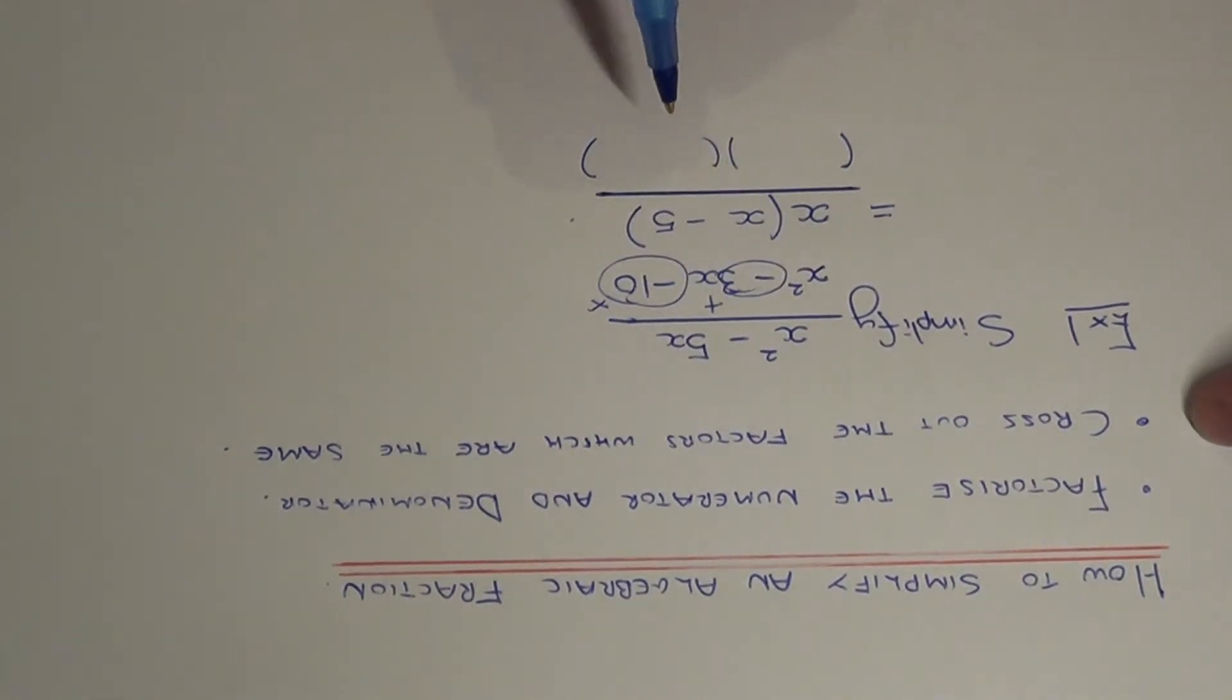So the pair of numbers that we need are minus 5 and plus 2. So if you put these inside the bracket.